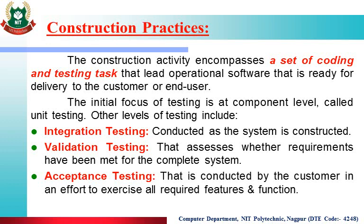Validation Testing means verifying that the software we have designed meets all the specified requirements. This checking happens under Validation Testing. Next is Acceptance Testing — after all other testing is performed, Acceptance Testing is the last one, and it has two types: alpha and beta testing, which we will discuss in the next unit.